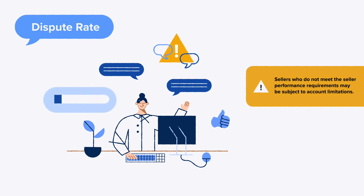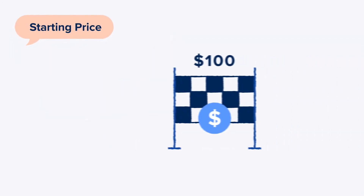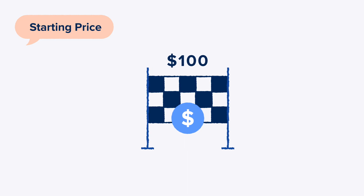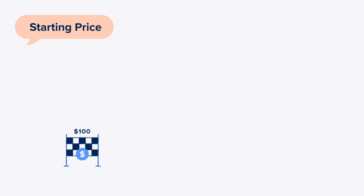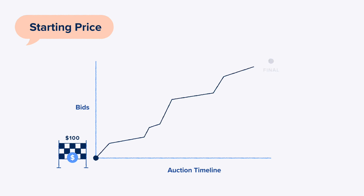The starting price is an important piece in the success of your auction. We recommend starting your auction at $100 to encourage early bidding, which ultimately drives up the final price. While a low starting price may seem counterintuitive, it increases the number of buyers that participate in the auction by lowering the barrier to entry. The more buyers that participate in your auction, the higher the final sale price.